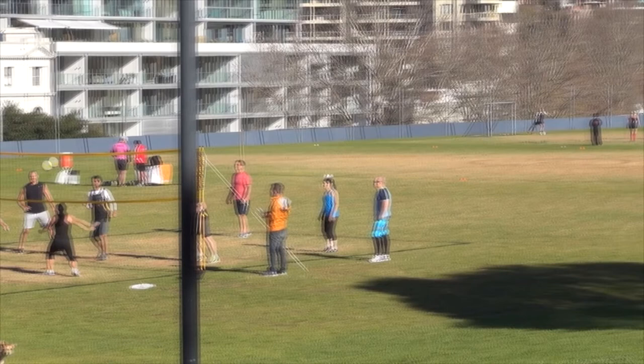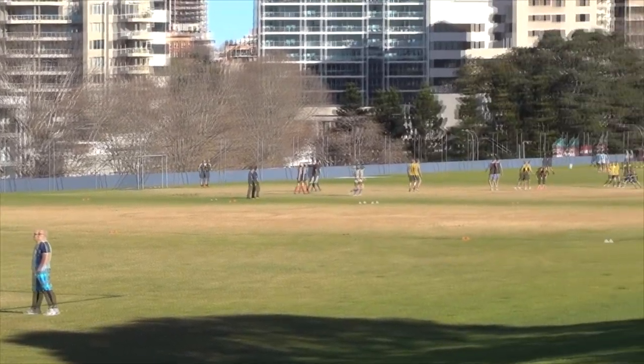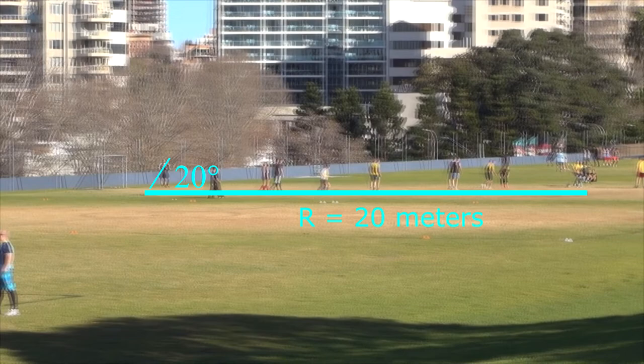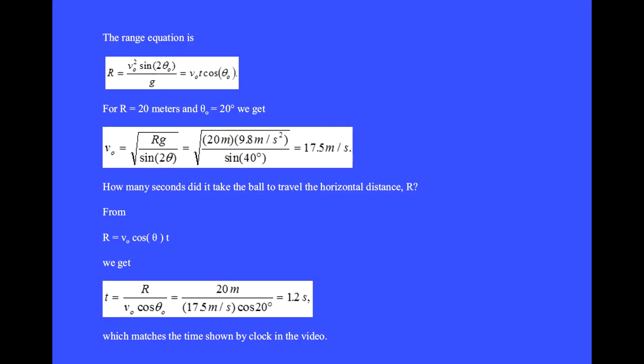This is weekend volleyball and soccer in Sydney. This person is about to kick the ball at a launch angle of 20 degrees and a range of 20 meters. What is the initial launch velocity? We will use these two sides of the range equation.